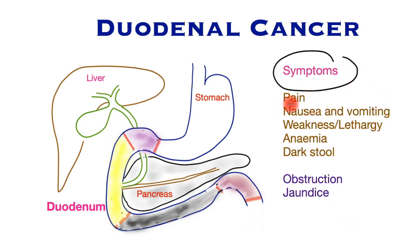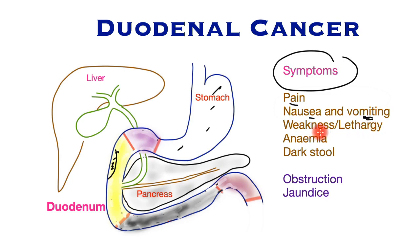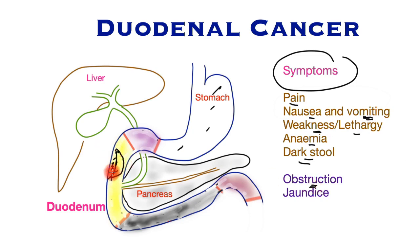The symptoms of duodenal cancer include pain, typically in the pit of the stomach. As the cancer increases in size, it causes obstruction to the passage of food, leading to nausea and vomiting. Typically the vomiting occurs after several days, and immediately patients feel much better and can eat again — until the obstruction causes the stomach to fill up again and another cycle of vomiting starts. Patients typically lose weight, become weak and lethargic. More advanced cancers may start losing blood from their surface, leading to anaemia, or there may be obvious blood in the stool such as dark stool.